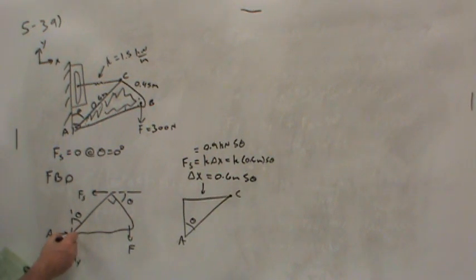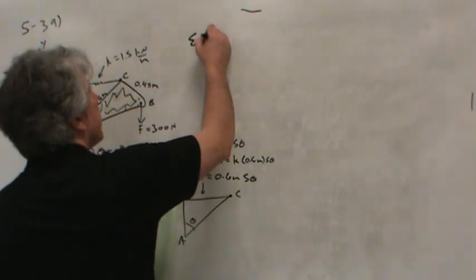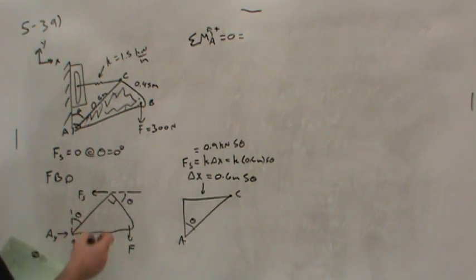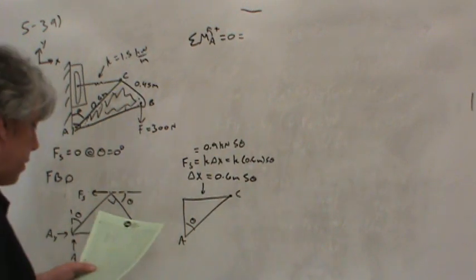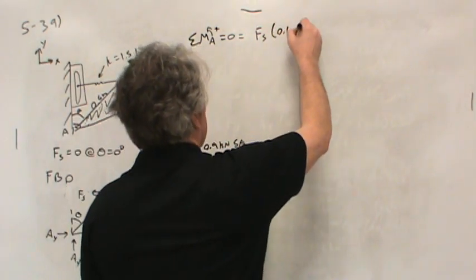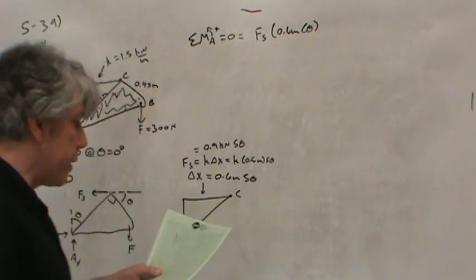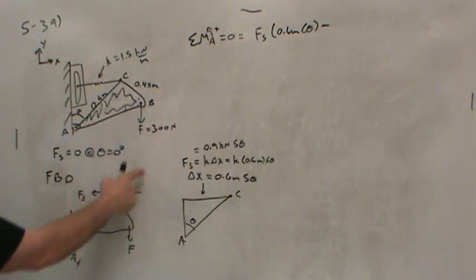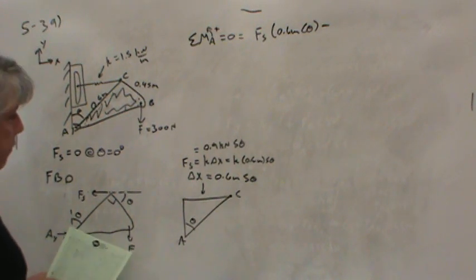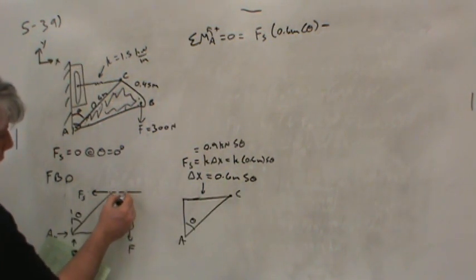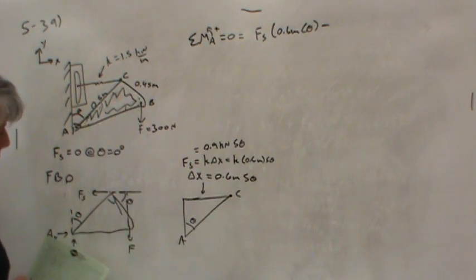What I'm going to do is sum moments about A, because I'd like to know the force in the spring from the beginning. Counterclockwise is positive, sum better come out to zero. So Fs, the force in the spring, has a moment arm of 0.6 multiplied by cosine theta. And then, if we subtract the moment caused by this 300 Newton force, we're going to need the moment arm for that. Basically what I need is this length plus the length of the spring for the moment arm of this force F.